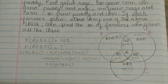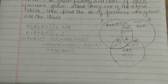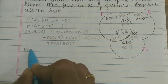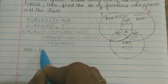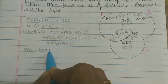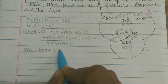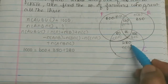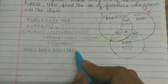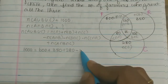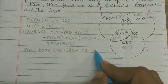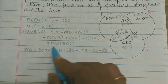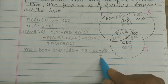Using the formula: n of A union B union C is 1000. So 1000 equals n of A which is 600, plus n of B which is 350, plus n of C which is 280, minus 120, minus 100, minus 80, plus n of A intersection B intersection C, which is x.